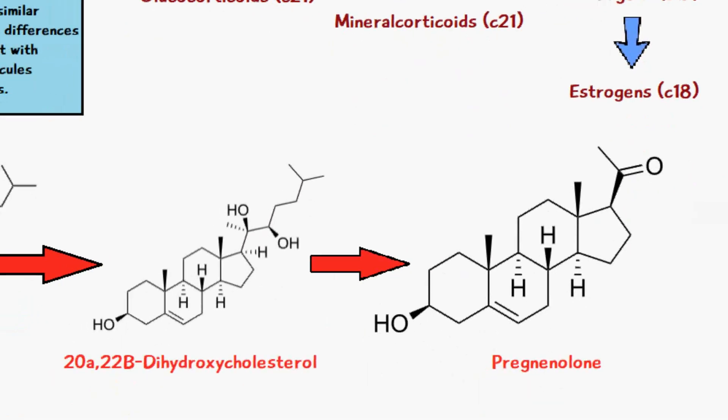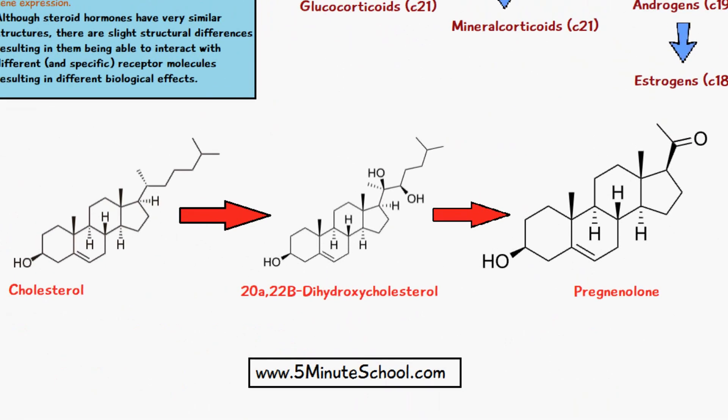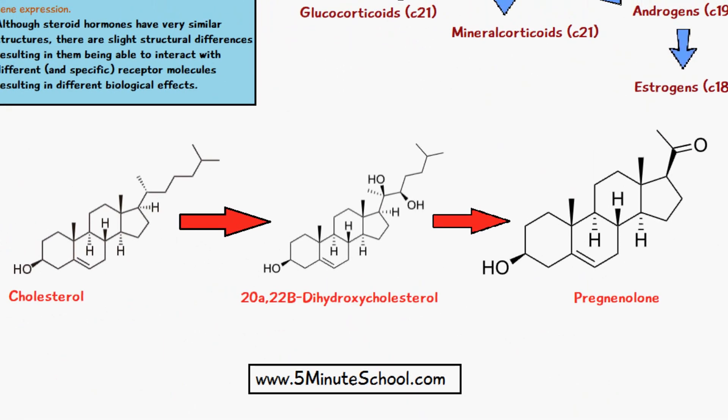This diagram shows the main structural differences between cholesterol and pregnenolone. You can see that there is a six carbon atom chain that has been lost, and that is the main structural difference between the two.